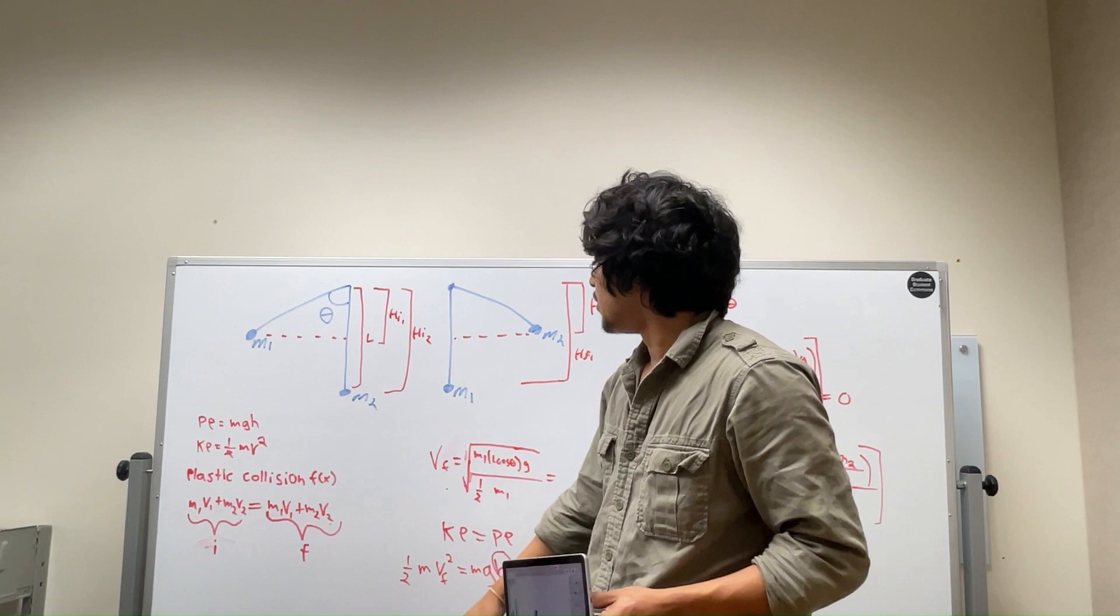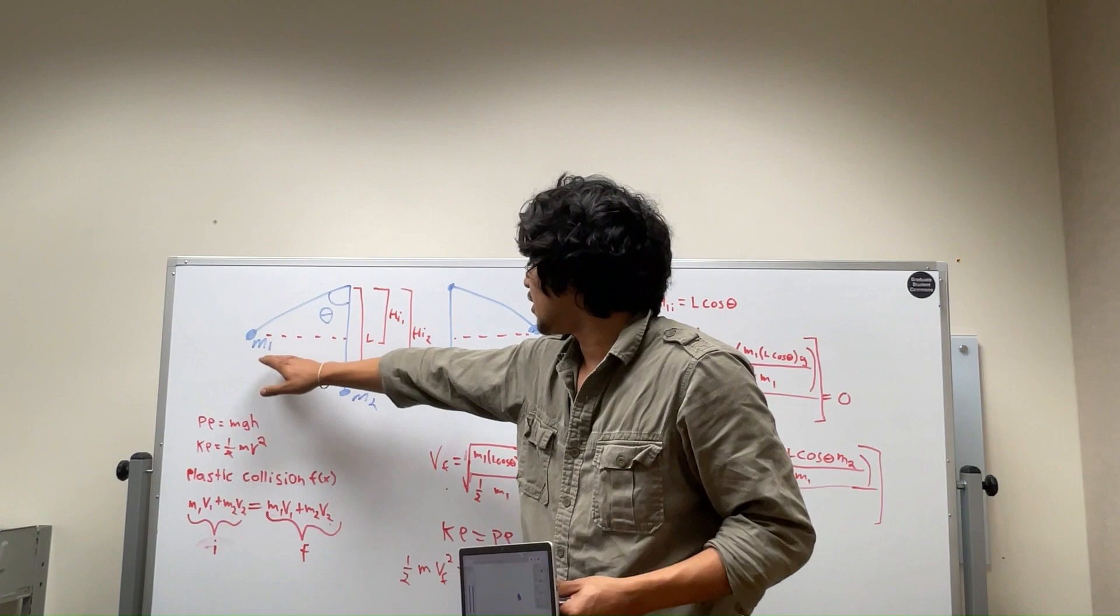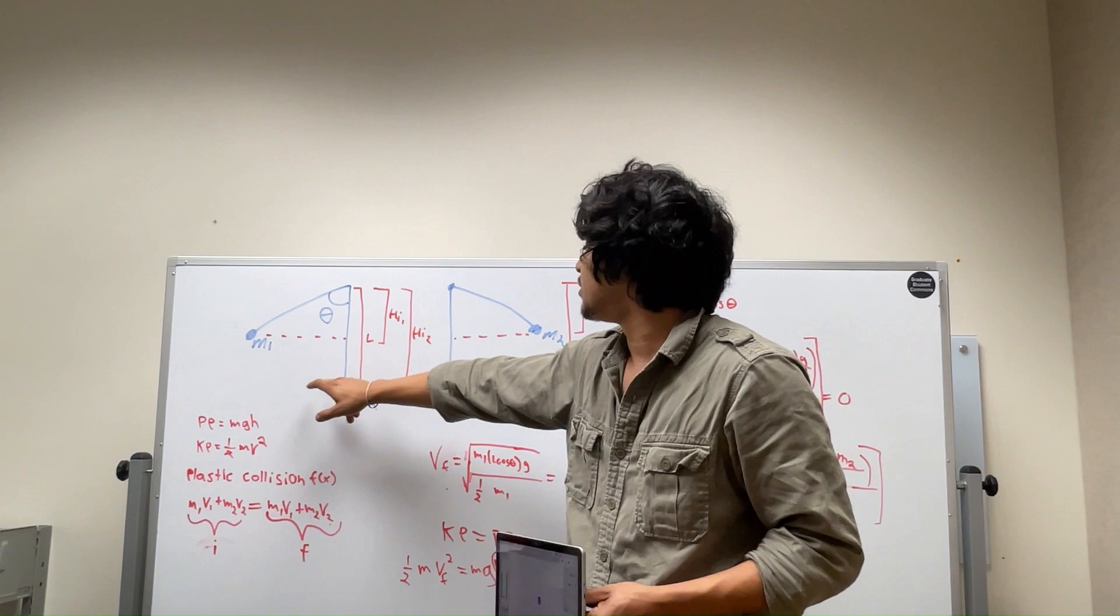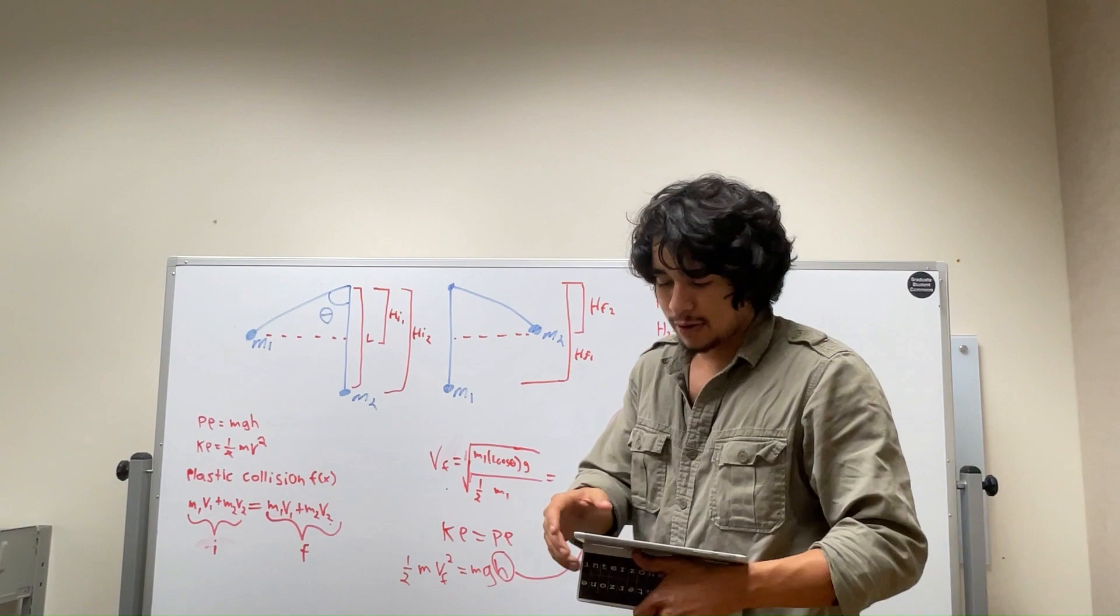And so when we do our elastic collision, we can set our energies equal to each other. And if both masses are the same, we will get a complete transfer of energy where mass 1 will stay at zero, and mass 2 will take the kinetic energy and turn it back into potential energy.